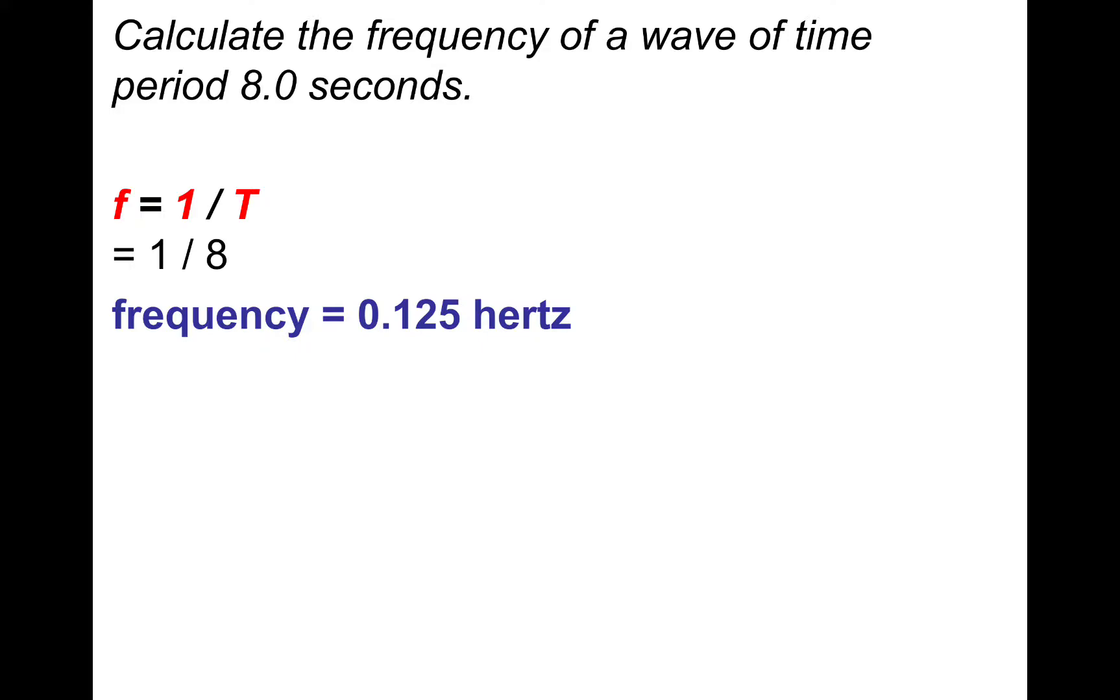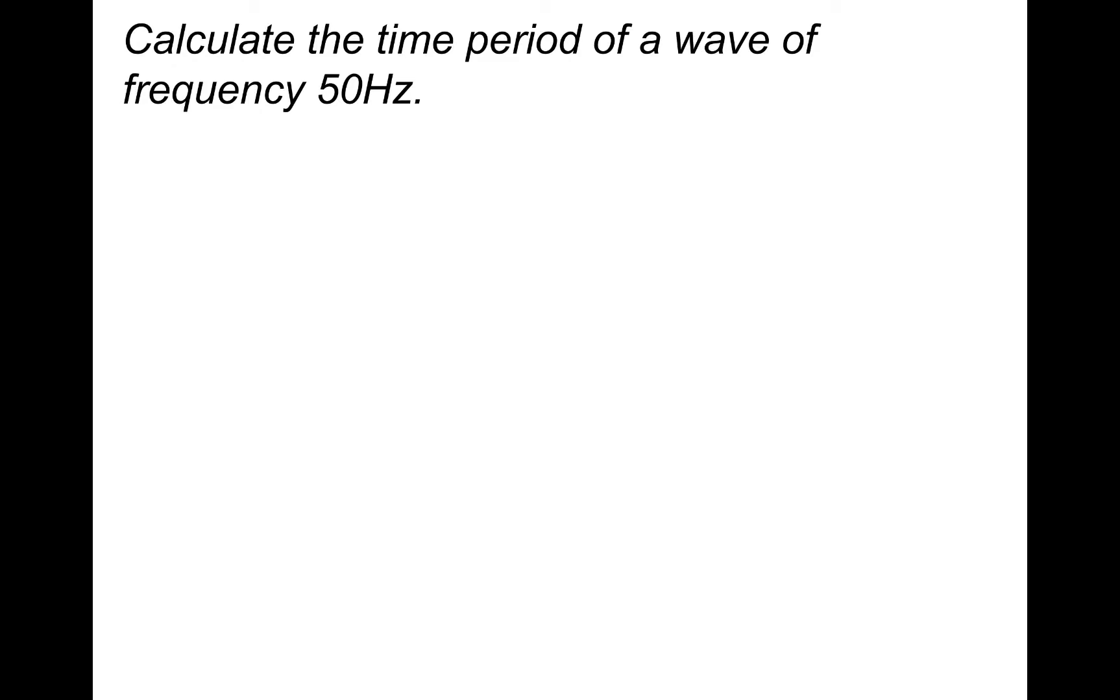Alright let's try another one. This time calculate the time period of a wave of frequency 50 hertz. Pause and have a go and I'll take you through the answer now. So time period is one over F so it's simply one divided by 50 which gives the time period of 0.02 seconds.